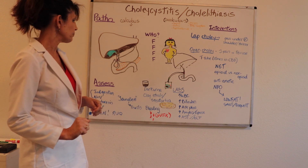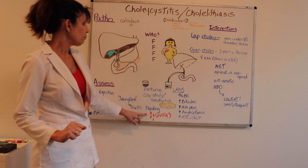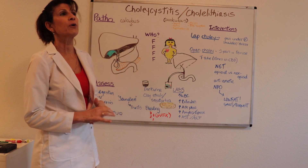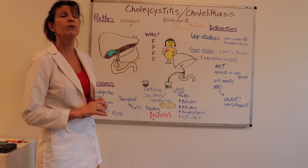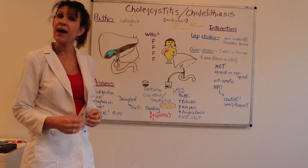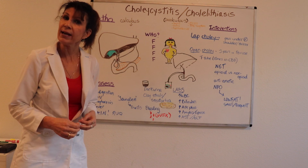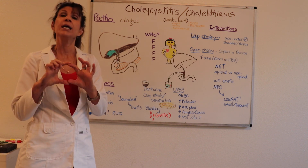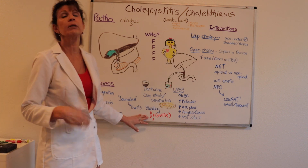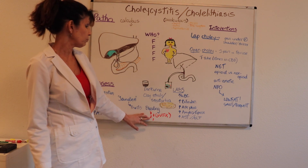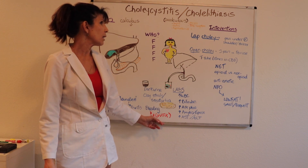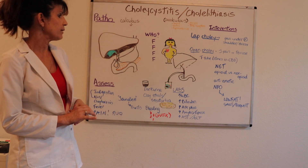Bleeding is also a concern. If you don't have bile to absorb fats and fat-soluble vitamins like A, E, D, and K, you're going to be at higher risk for bleeds — due to malabsorption of vitamin K.